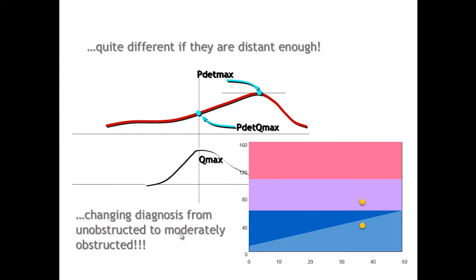What appears to be an after-contraction is most often not a true contraction after the voiding contraction, but rather a premature closing of the urethra with a consequent rise in detrusor pressure. So it's not simple to diagnose a true after-contraction. Either way — whether after-contraction or premature urethral closing — P-det-max may be higher than P-det-Q-max, and using the nomogram with one versus the other parameter gives completely different results. We must stick with P-det-Q-max.